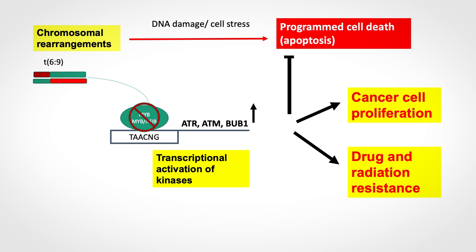Our hypothesis is that as a consequence of the translocation, MIB factors like MIB and MIB-NFIB are activated, and by doing so the cancer survives because MIB and MIB-NFIB in turn activate kinases such as ATR, ATM, and BAB1, which antagonize cell death and promote cancer cell proliferation — and probably also induce drug and radiation resistance.